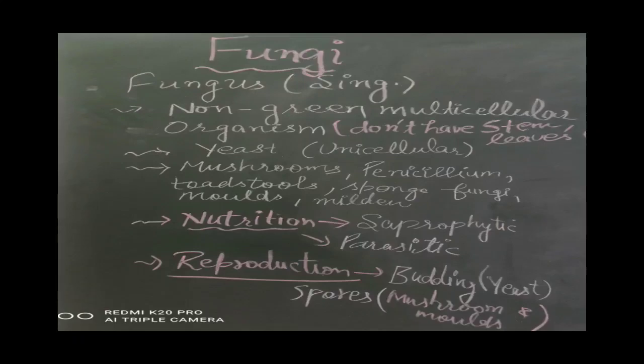Good morning friends. In this lecture we will learn about microorganisms. The next microorganism is fungi or fungus. Fungus is a non-green multicellular organism and they don't have stem or leaves. The unicellular fungus is known as yeast. It is a unicellular fungus which is used at the commercial level for the fermentation process.